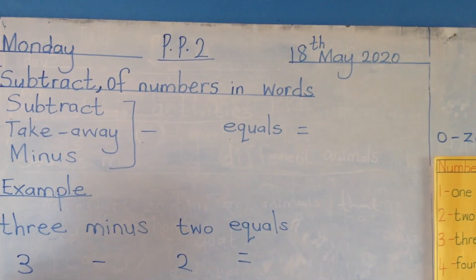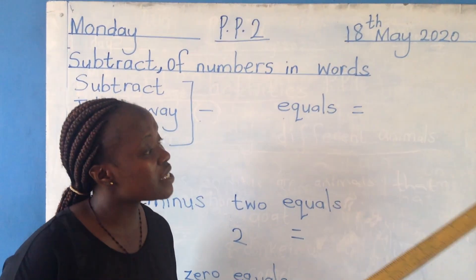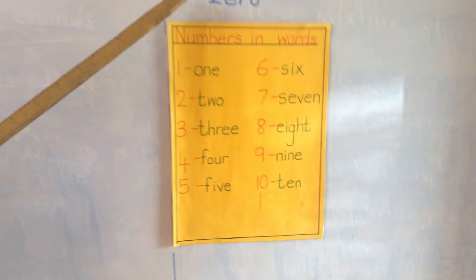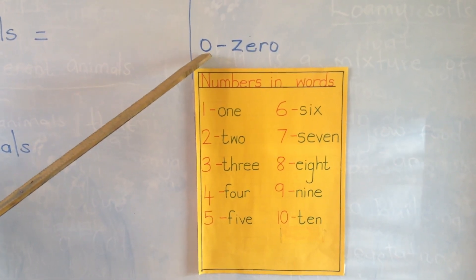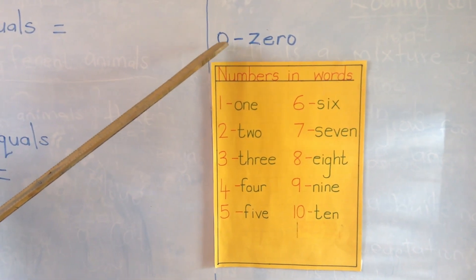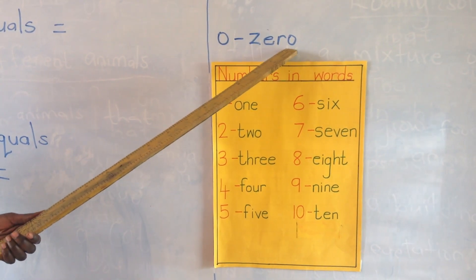First of all, I want us to remind ourselves numbers in words. Today we are going to start from zero to ten. This is number zero, which means nothing. And this is the word zero.